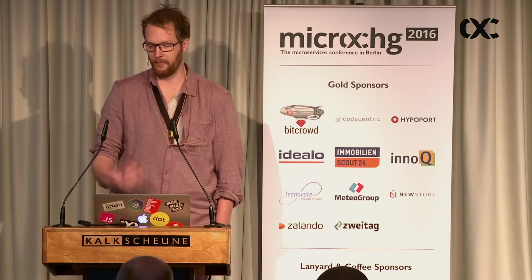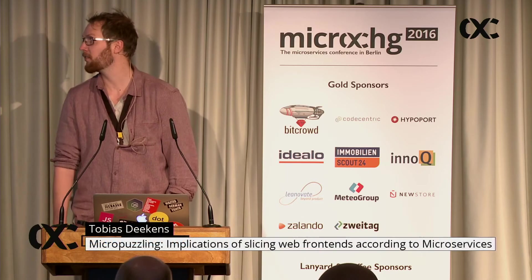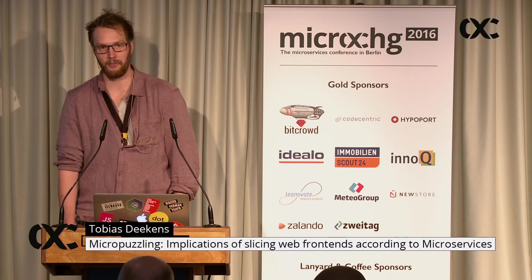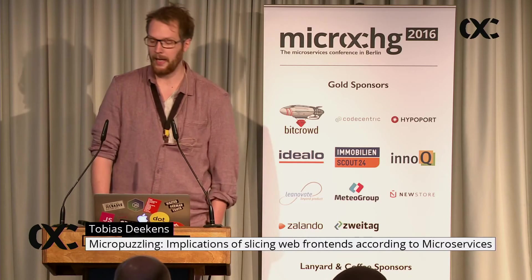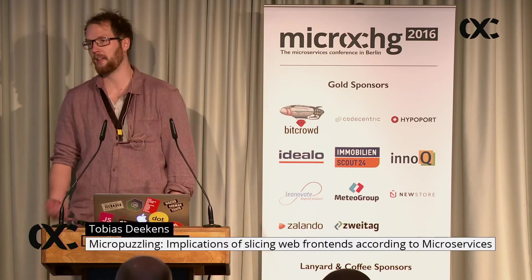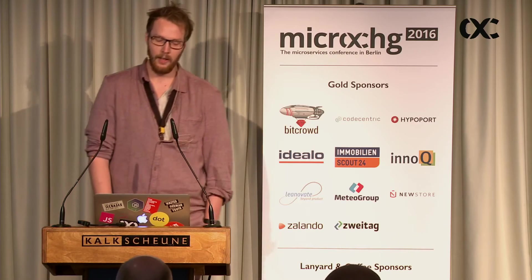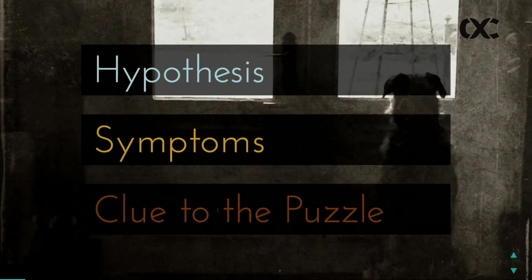So to start off, a little agenda. First of all I wanted to set up a hypothesis about frontend development at the moment, which is kind of an observation of the status quo — just saying that we're yielding the same results over the last couple of years. Then I wanted to give some symptoms which will fulfil the hypothesis if you observe them within your system during development, and then I will give a clue to the puzzle — how we tried to avoid the symptoms — and how we basically built the whole thing.